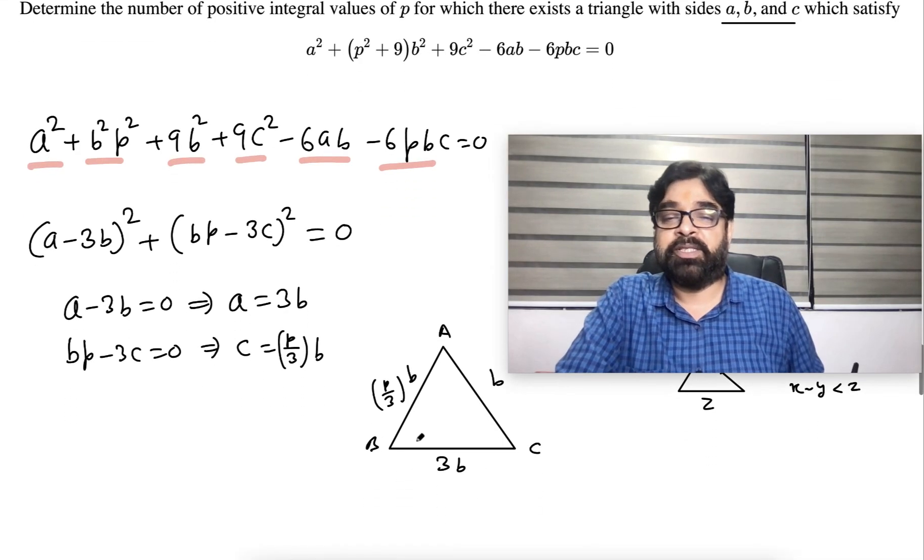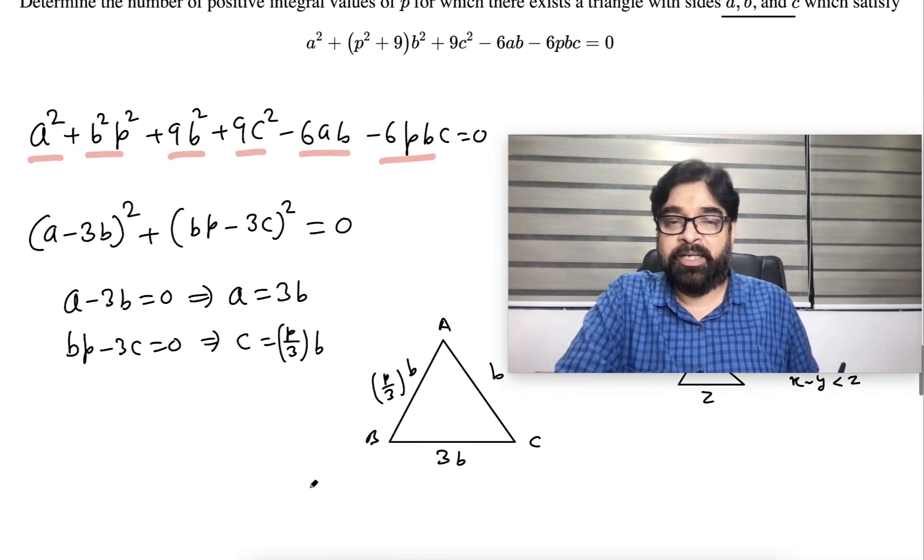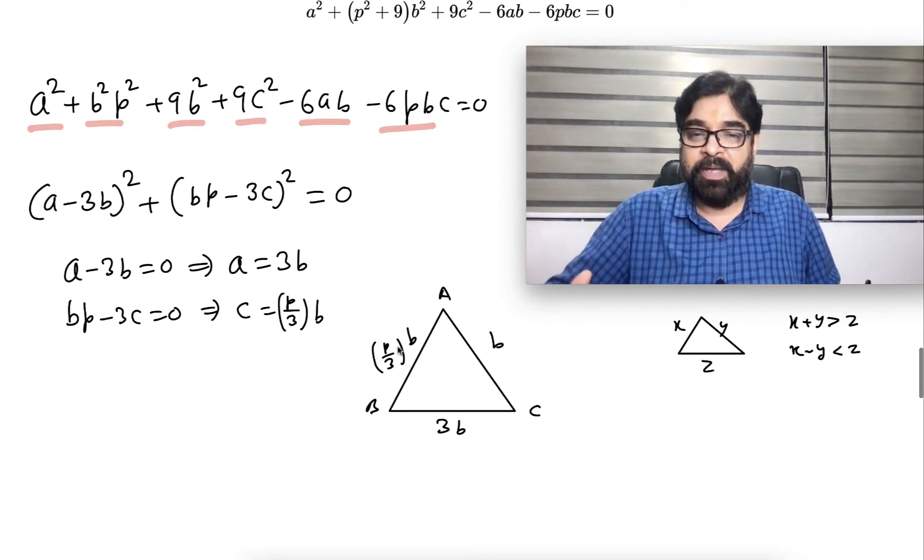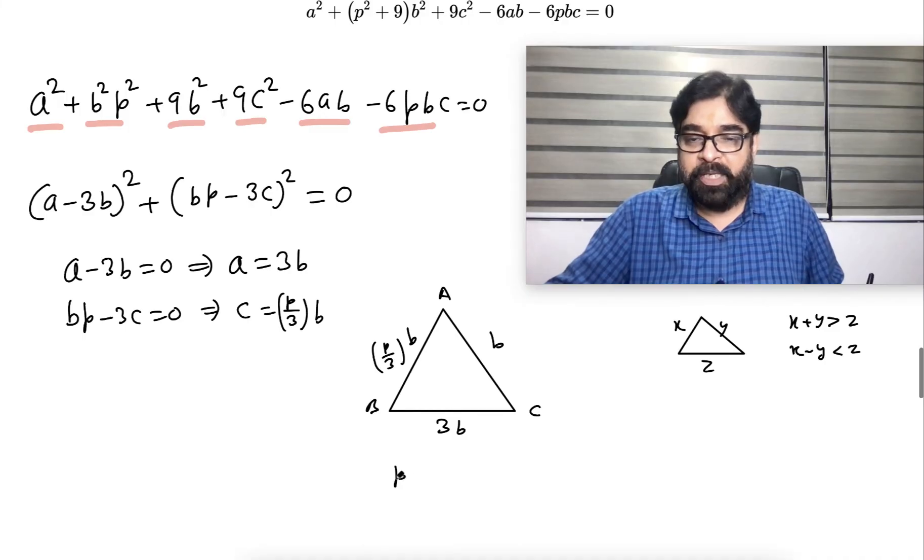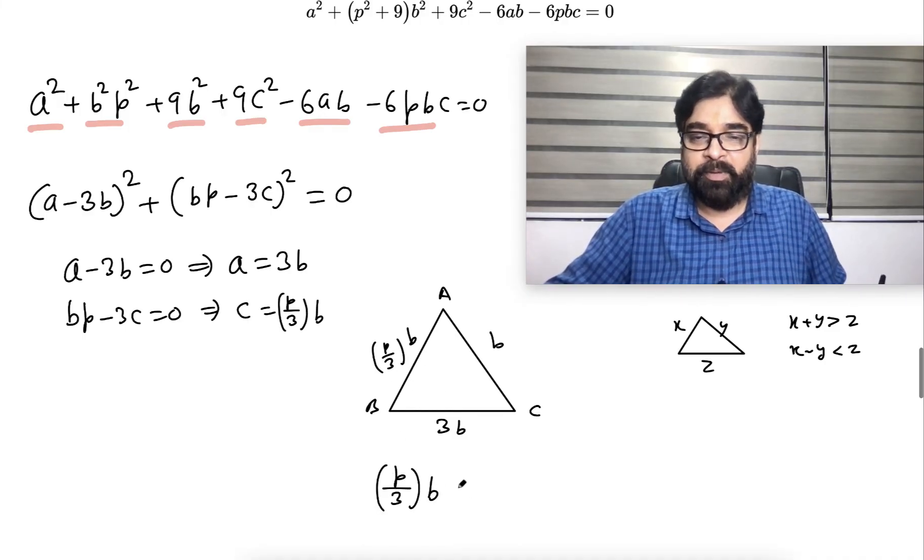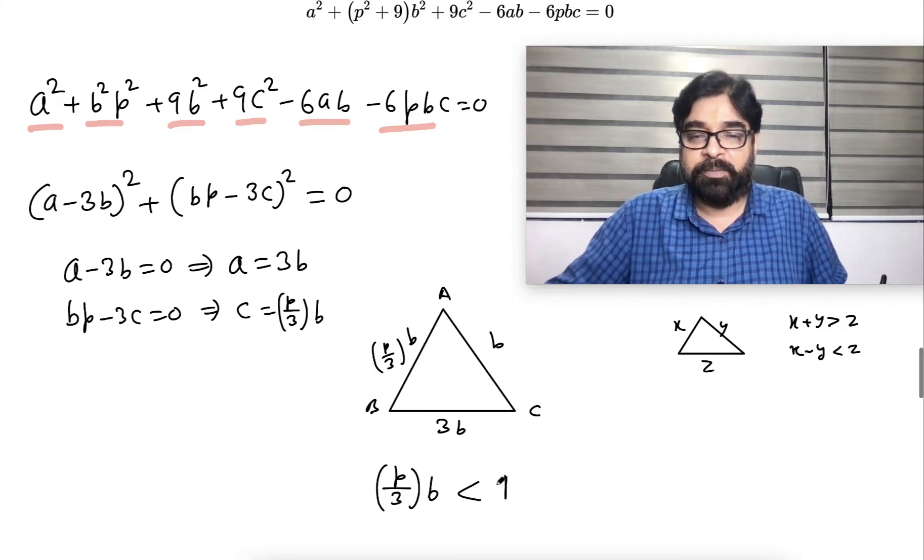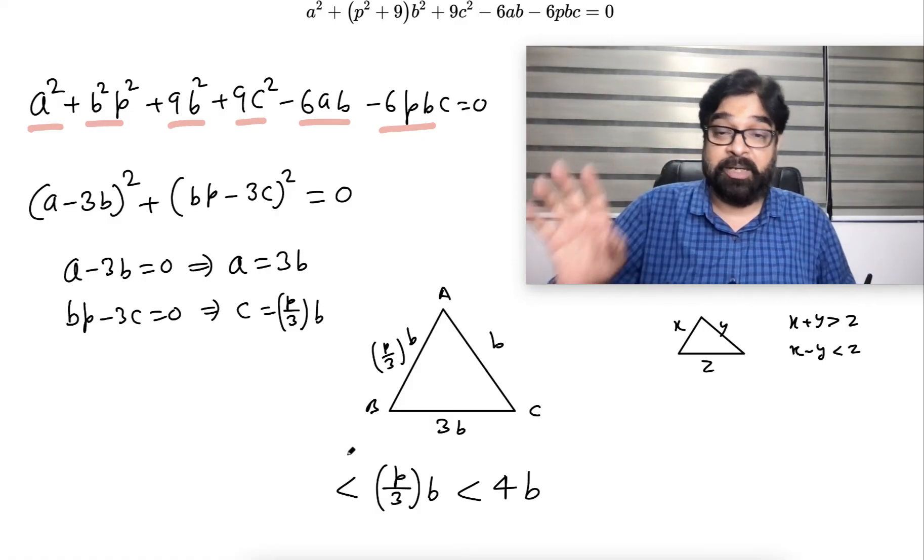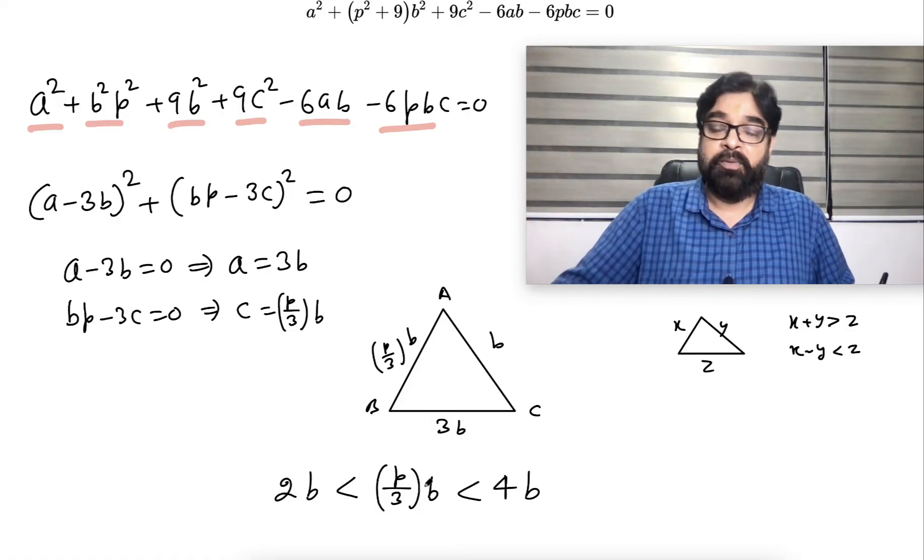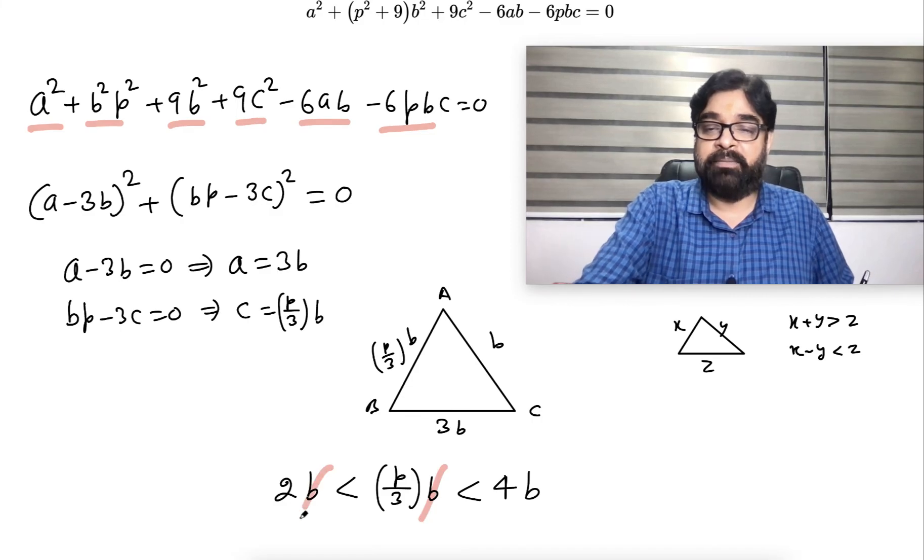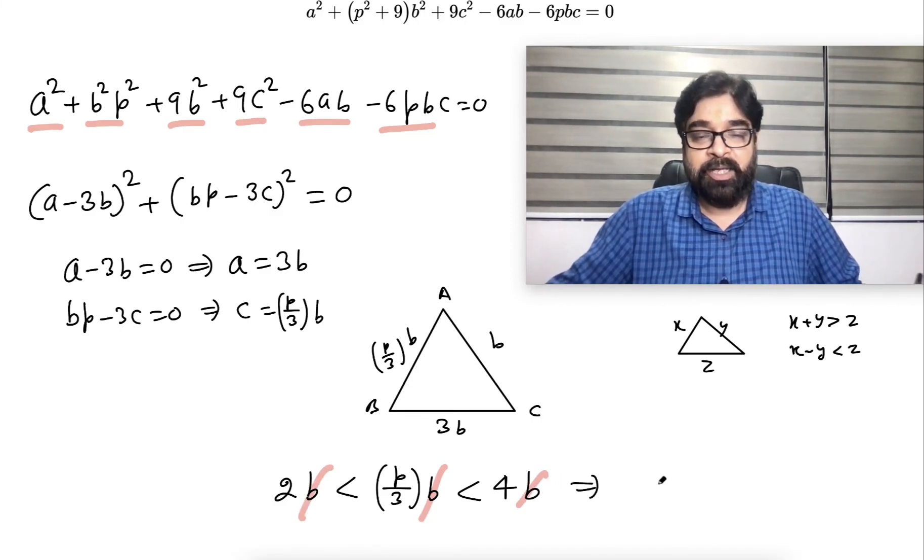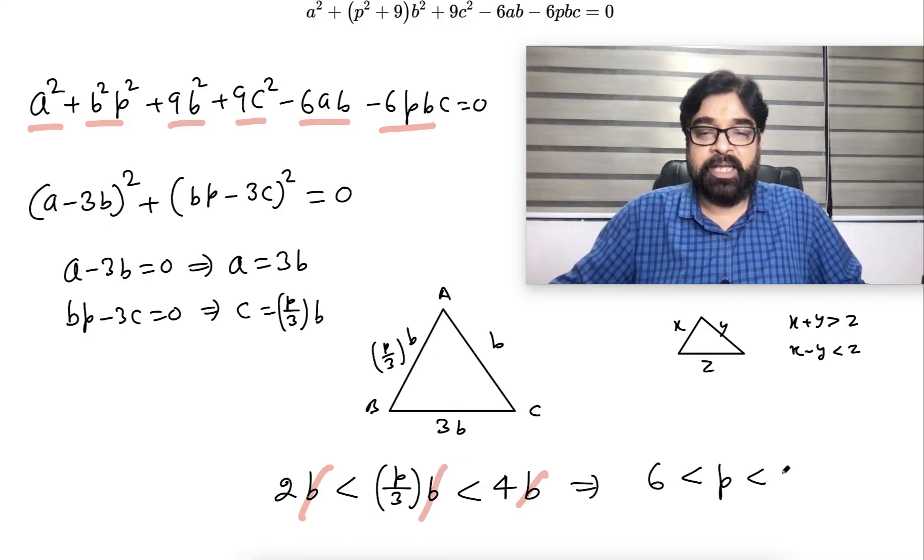For the third side, (p/3)b will be less than the sum of two sides, which is 4b, but greater than the difference. Be clear - difference, not subtraction. We can see very clearly 2b. I don't want b and 3, I can multiply through.